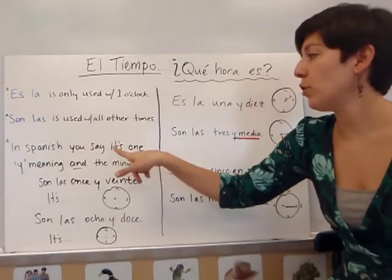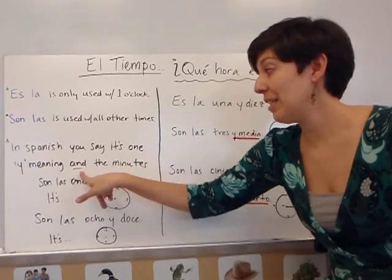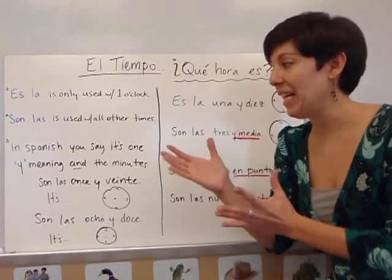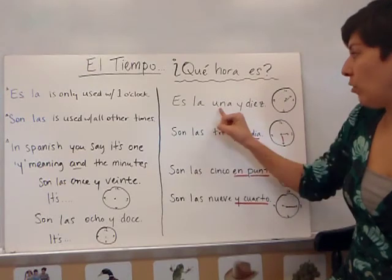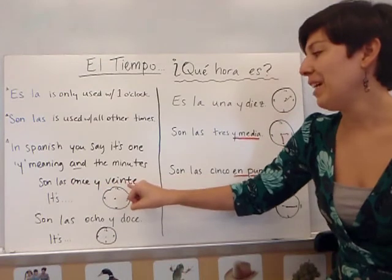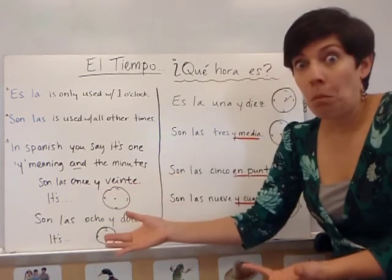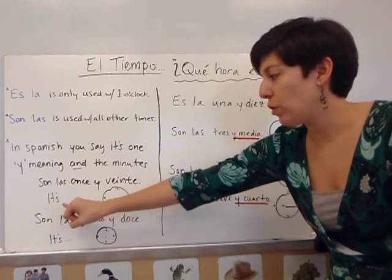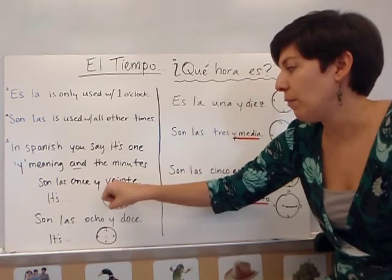In Spanish, you say the hour, then y — meaning 'and' — then the minutes. So you would say whatever the hour is, y the minutes, just like we did: tres y media, una y diez. So if you look here, I have son las once y veinte. Son las once y veinte. I want you to go ahead and draw the clock in your notes and tell me what time it is. Once y veinte.